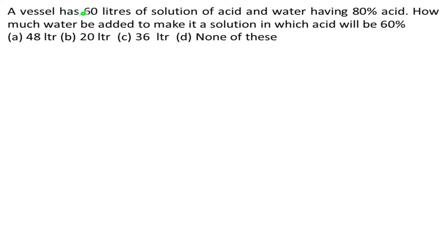A vessel has 60 liters of solution of acid and water having 80% acid. How much water do we need to add to make it a solution in which acid will be 60%? Options: A) 48 liters, B) 20 liters, C) 36 liters, D) None of these.